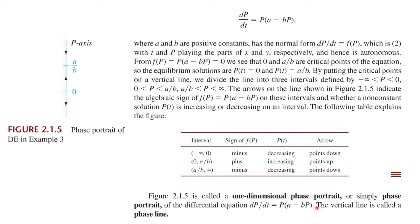So these are called a one-dimensional phase portrait or phase portrait of this differential equation. And the vertical line is called a phase line. And you notice the behavior is different in those different quadrants or at least can be.